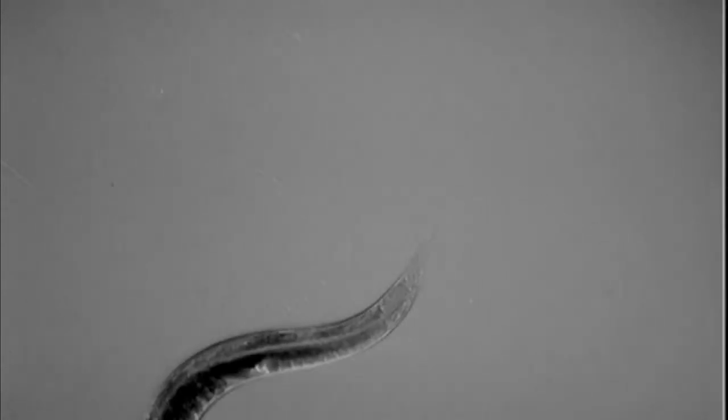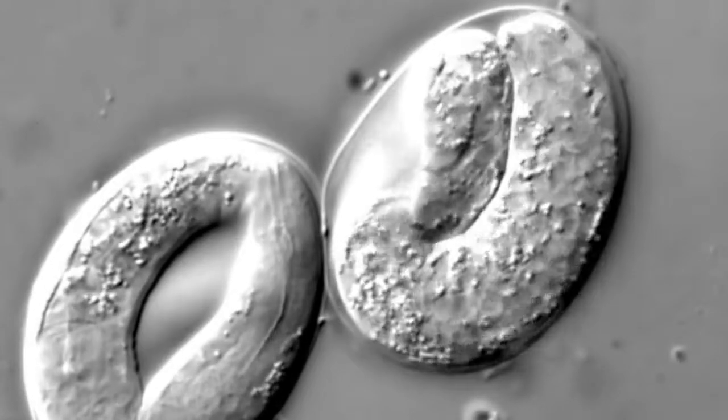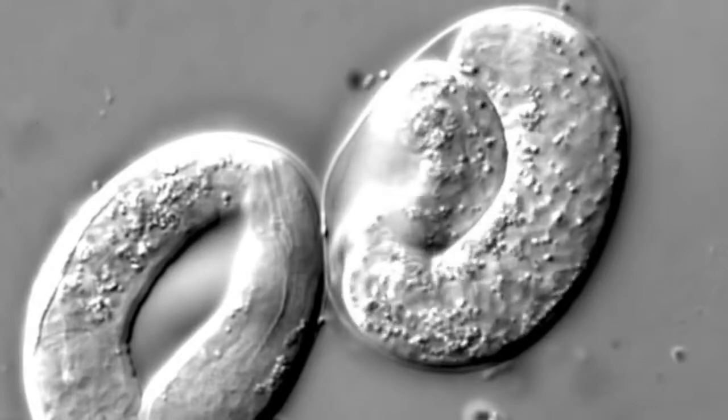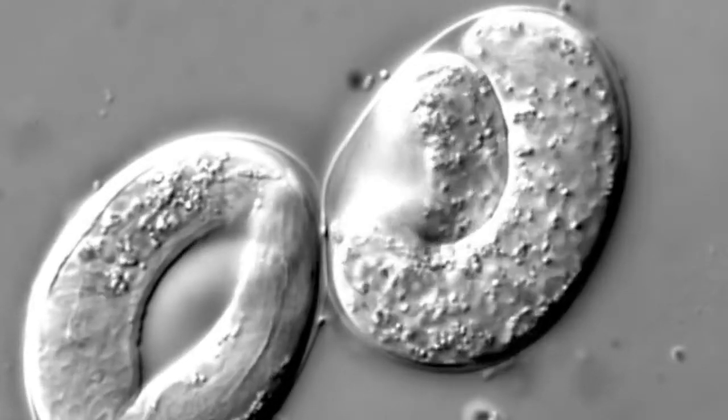In the laboratory, however, C. elegans are typically fed lab strains of E. coli. C. elegans are transparent, thus facilitating the study of cellular differentiation and developmental fate of each of its cells.